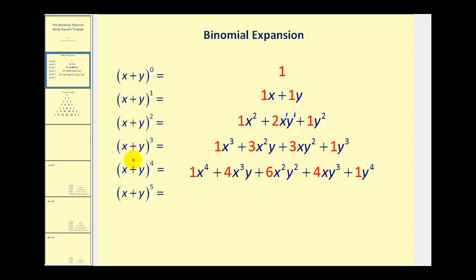If we take a look at the next row, we have the quantity x plus y to the third power. We start off with three factors of x. The next term has two factors of x and one factor of y — still adds to three. The next term has one factor of x and two factors of y, so we drop a factor of x and pick up a factor of y, and the sum of the exponents is still three.